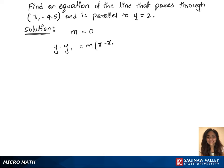Let's use the formula y minus y1 equals m times x minus x1 to find the equation. We have the point, so let's plug in: m is 0, x1 is 3.